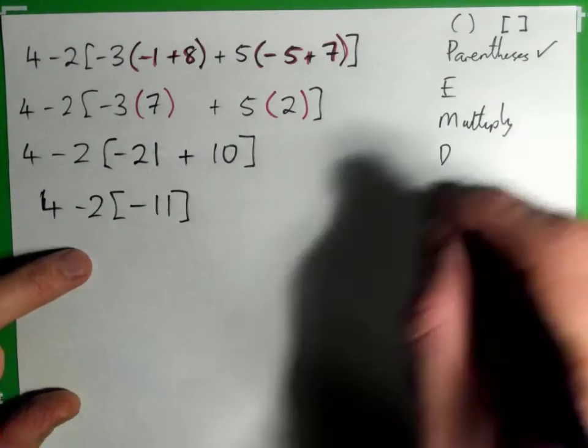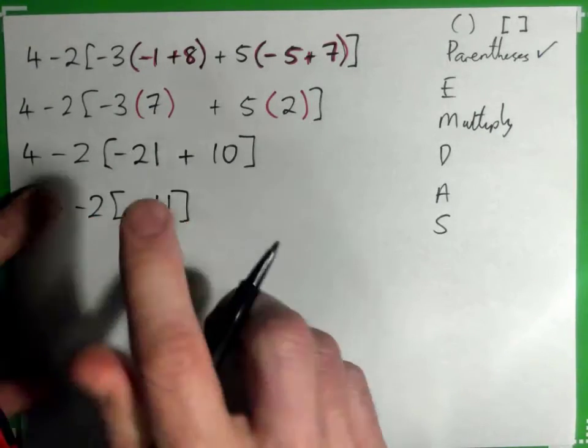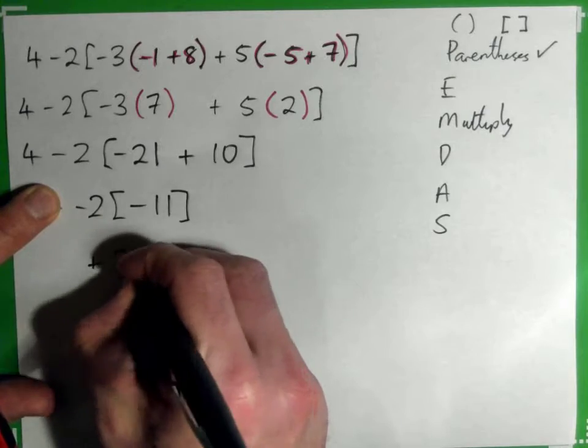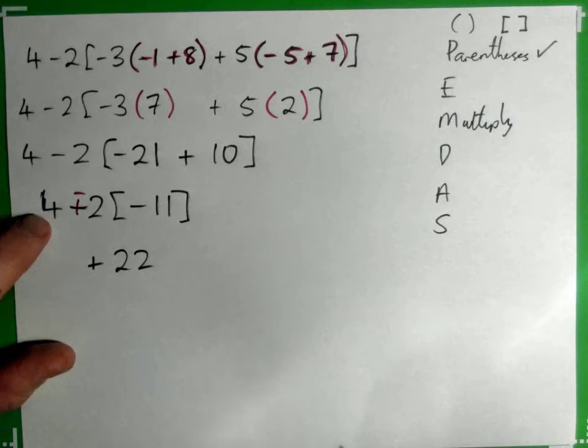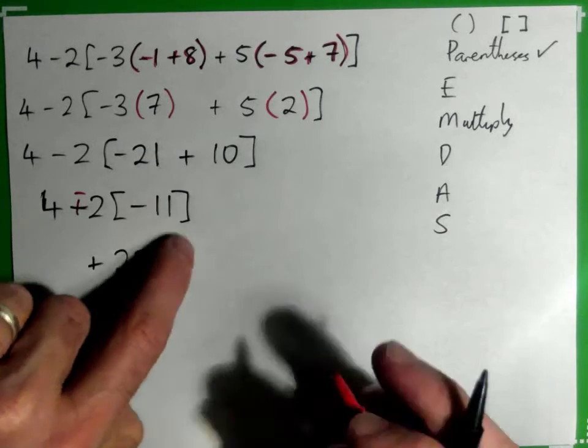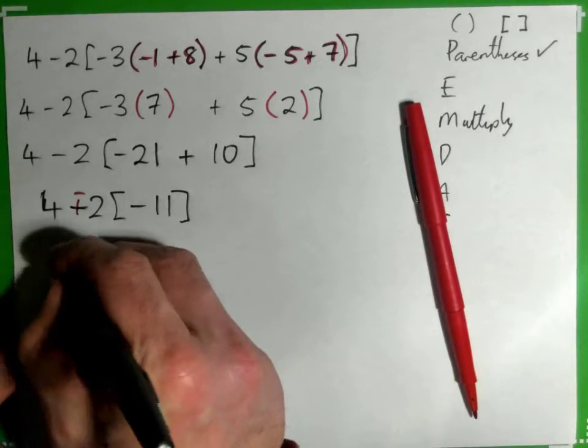Negative 2 times negative 11 is plus 22. Or you could change that subtraction to plus negative. It says 4 plus negative 2 times negative 11 is positive 22, and then write the 4 down.